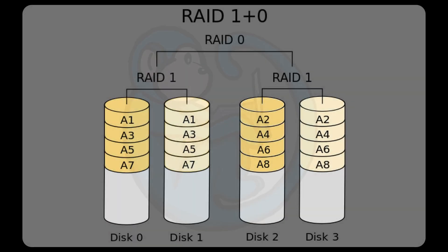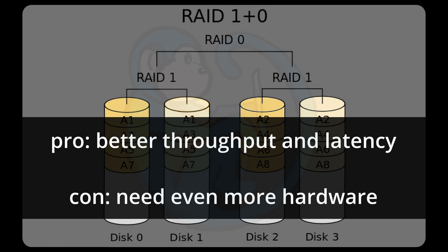The last one we'll cover is RAID 10, or RAID 1 plus 0. Because it is a stripe of mirrors, the data is written across at least two stripes, and then each one of those stripes is mirrored, so you definitely have a backup of the data. RAID 10 needs at least four drives because you're mirroring over half of it. The advantage is much better throughput and latency, and the negative is that it needs even more hardware than the other configurations.